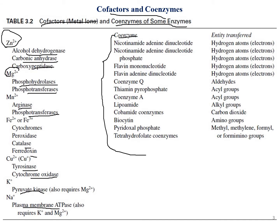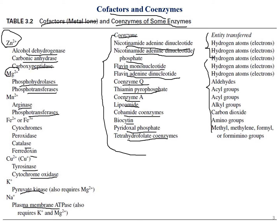Talking about coenzymes: NAD (nicotinamide adenine dinucleotide) and NADP (nicotinamide adenine dinucleotide phosphate) are involved in hydrogen atom transfer. FMN (flavin mononucleotide) and FAD (flavin adenine dinucleotide) are also coenzymes. Other coenzymes include coenzyme Q, thiamine pyrophosphate, coenzyme A, lipoamide, cobamide coenzymes, biocytin, pyridoxal phosphate, and tetrahydrofolate.